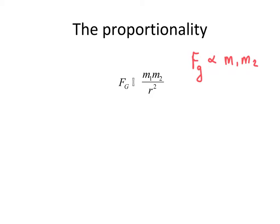So if I double mass M1, then I must also double the force of gravity between the two masses. If I double mass M2 as well, then two times two is four, so I must have multiplied the force of gravity by four. So that shows us a little bit about how the proportionality works.